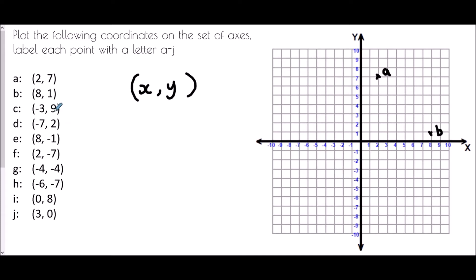For C, starting at zero zero, it says negative three in the x direction but positive nine in the y direction, so we plot the point there — that's C. Negative seven, two means negative seven in the x direction and plus two in the y direction — that's point D. E says (8, -1): eight to the right and one down — there is point E.